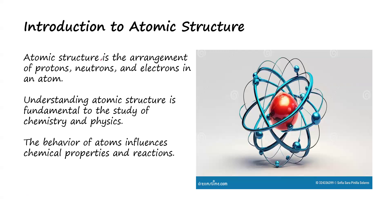So introduction: atomic structure is the arrangement of protons, neutrons, and electrons in an atom. You know that the atom is circular, and of course in the center we have the nucleus. In the nucleus, we have two fundamental particles, which are protons and neutrons. Protons and neutrons are found in the nucleus of the atom, while electrons are found on the shell. So these are the three fundamental particles of an atom.